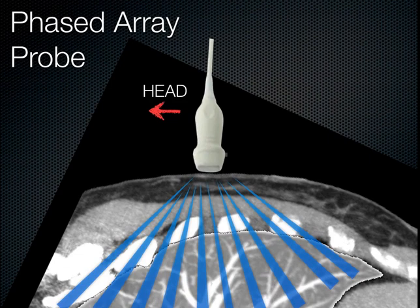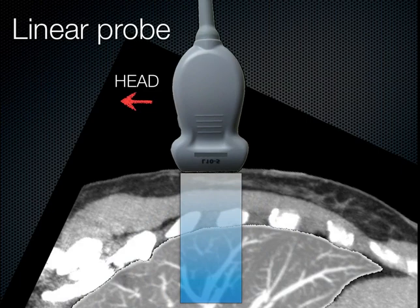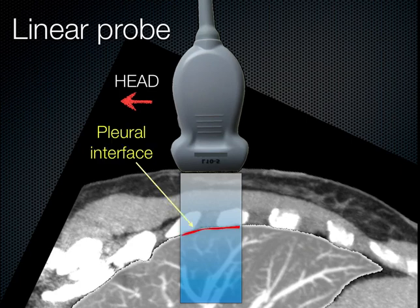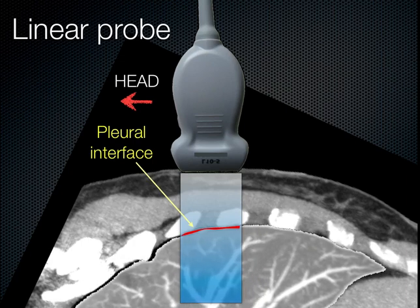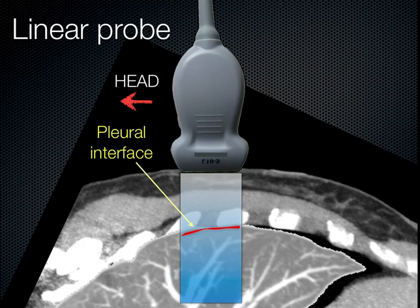The low-frequency phased array probe has a small footprint but has the capacity to display a broad, deep field. However, the displayed ultrasound beam results in loss of resolution in the deeper planes. In contrast, the high-frequency linear probe has a larger footprint and displays a great deal of detail, but at the expense of depth. Since the ultrasound beam does not expand laterally, the resolution at the surface is similar to the resolution in the deeper planes. This high-frequency probe gives an excellent view of the pleural line and sliding.